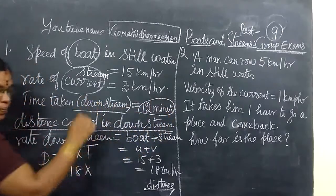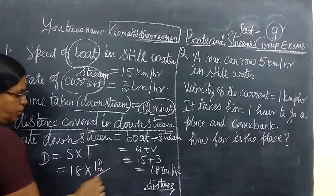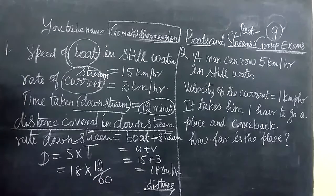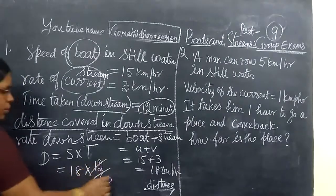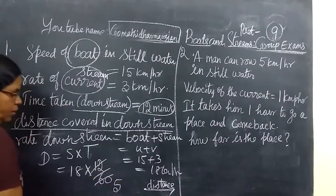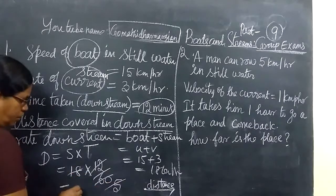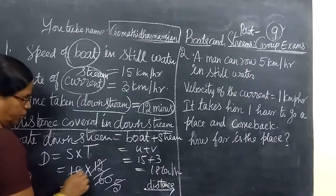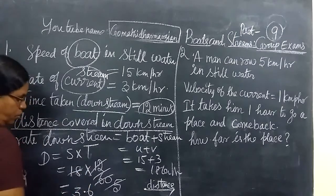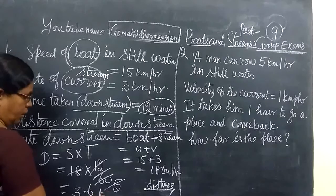Here the time given is in minutes. You change into hours, you divide by 60. So this one you cancel, you get 5 times. Then this one you cancel, 3 times balance. Then 6 into 3, so 3.6 km.